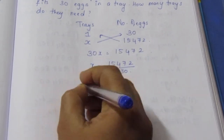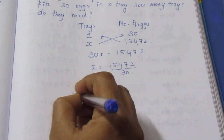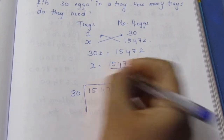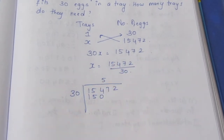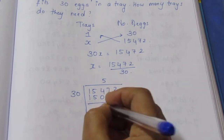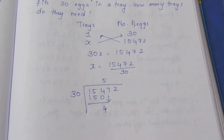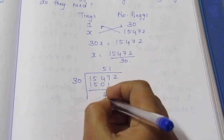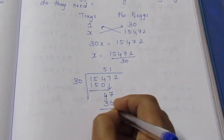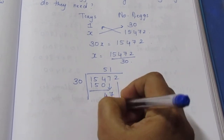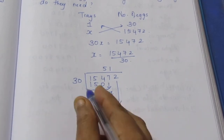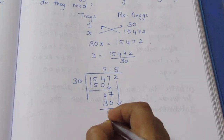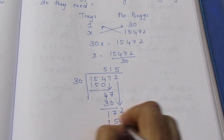This division gives us 15,472 divided by 30. Working through the long division: 30 into 154 gives 5, since 5 times 30 is 150. Bringing down 7, we get 47. 30 into 47 gives 1, since 31 times 30 is 30, leaving remainder. Continuing, we get 22 as the remainder. So the result comes to 515 remainder 22.